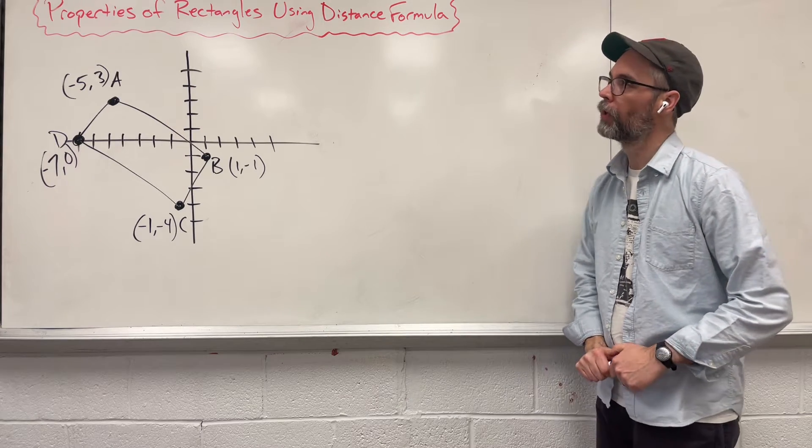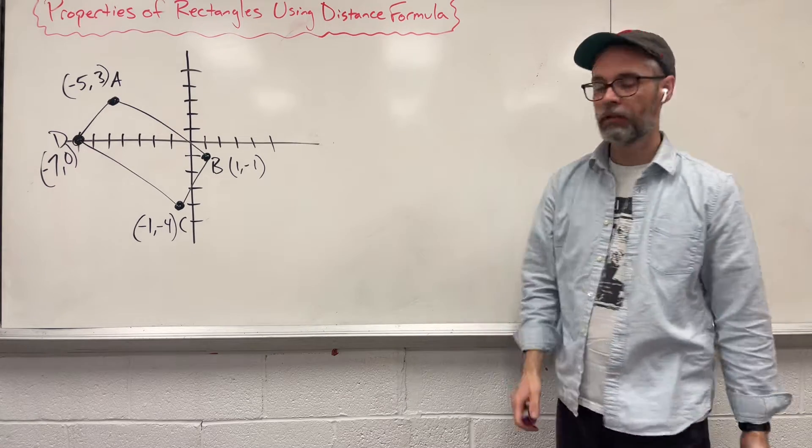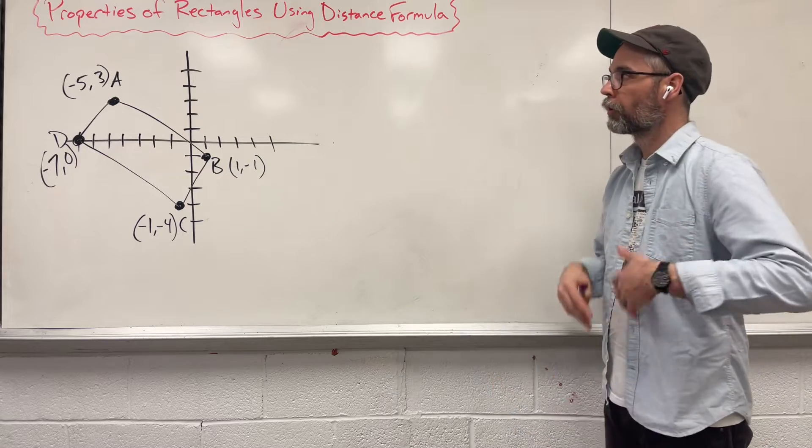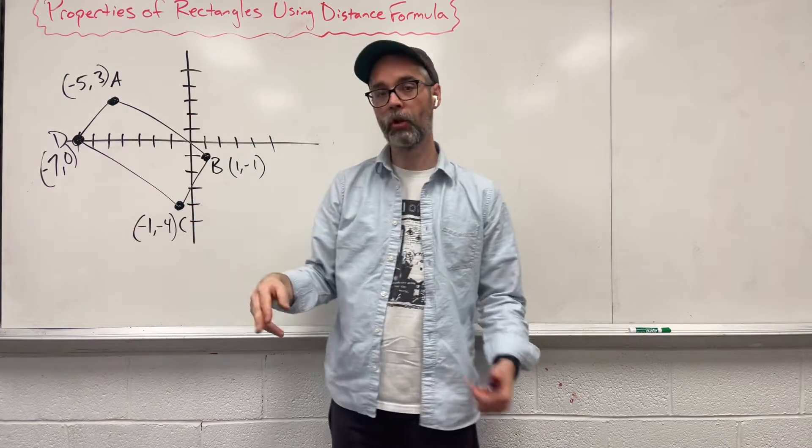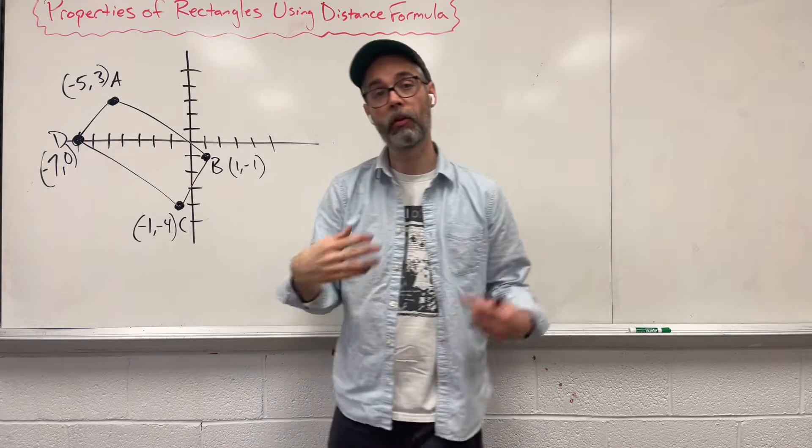Hi, today we're going to take a look at using the distance formula to help prove that this is in fact a rectangle. So we're going to use this distance formula to figure out that our opposite sides are going to be congruent to each other, they're going to be the same.